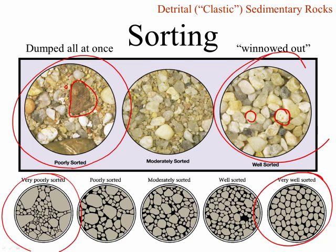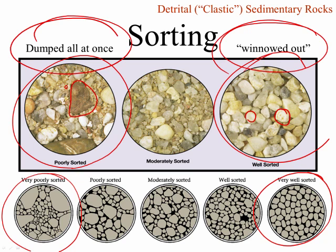Think about a river carrying a bunch of different particles. As this river slows down, it deposits the really big stuff in one place, the slightly smaller stuff in another place, medium-sized stuff beyond that, small stuff beyond that, and really tiny stuff way out beyond that. Or is this like a flash flood where it picks up a whole bunch of stuff, courses along really quickly, and then just drops it all at once? If it's dumped all at once, it's poorly sorted. If it's deposited progressively, we can call that winnowed out, and that gives you a well-sorted sedimentary rock.